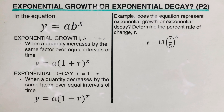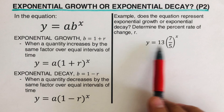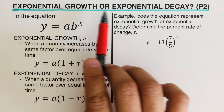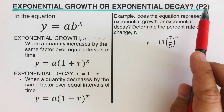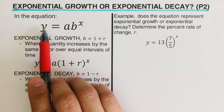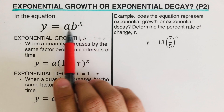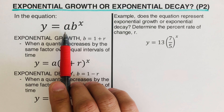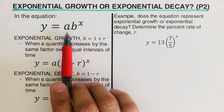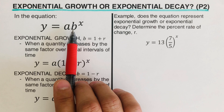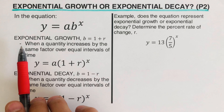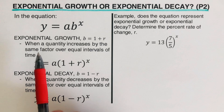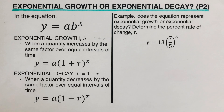Hello everyone. In this video we will determine if a given exponential equation is an exponential growth or an exponential decay. This is the second part — I will put the link to the first part in the description box below. In the equation y = ab^x, 'a' is the starting value, also called the initial value, 'b' is either the growth factor or decay factor depending on the problem, and 'x' is the exponent.